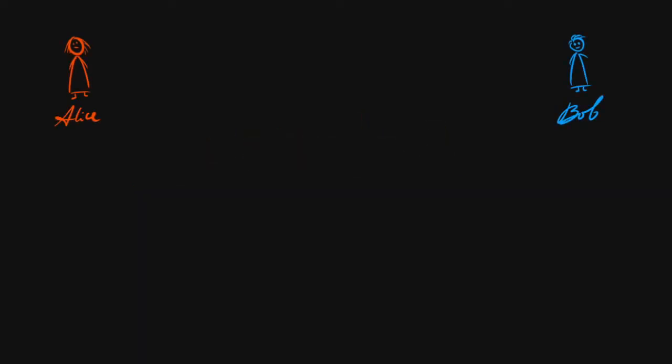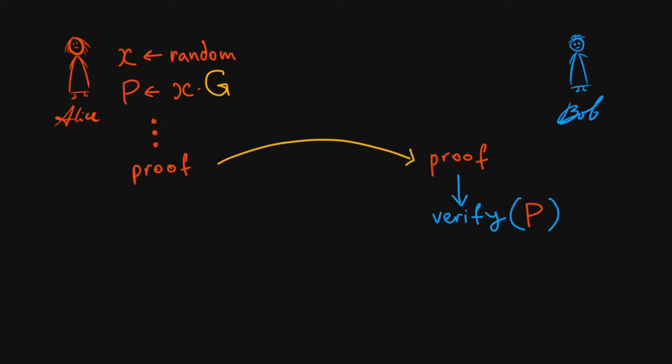The essence of the Schnorr signature is proof of knowledge of the private key. Let's say Alice has a private key X and a public key P. Bob knows Alice's public key. To make sure that he is in fact communicating with Alice, Bob will ask her for proof of knowledge of the corresponding private key. How could she provide such a proof?